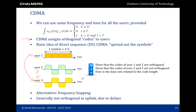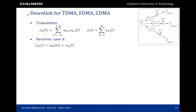An alternative is frequency hopping. Typically, even when codes are designed to be orthogonal, they are often not orthogonal in the uplink due to delays, because signals from different users will have different propagation delays. Let's look at this in more detail, starting with the easy case: downlink.